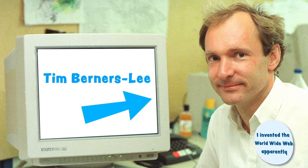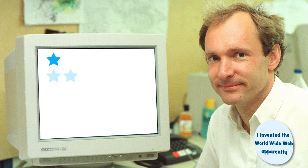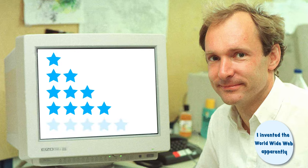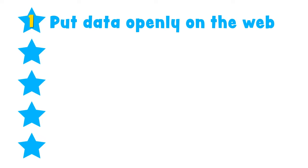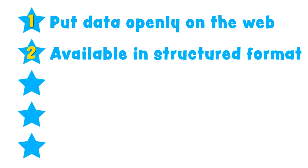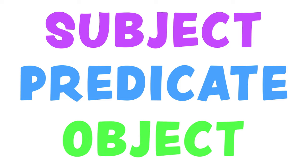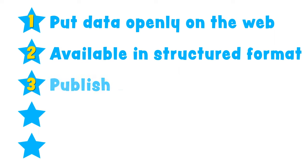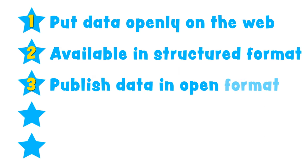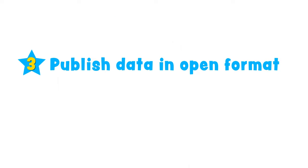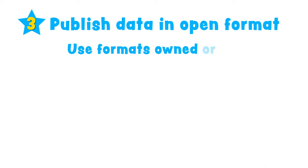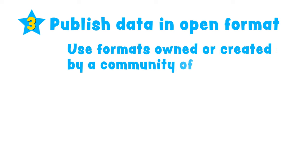He graded it from one star to five stars, five being the best. One star: you put data openly on the web. Two star: make it available in a structured format — subject, predicate, object. Precisely. Three star: publish the data in an open format which everyone can use. Open format means that when you publish data, use formats owned or created by a community of users, not just a company.